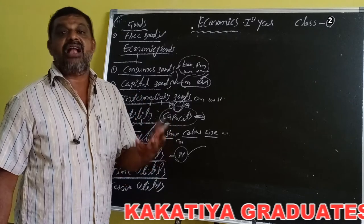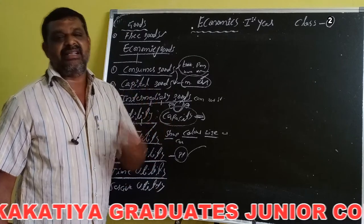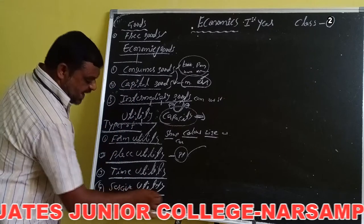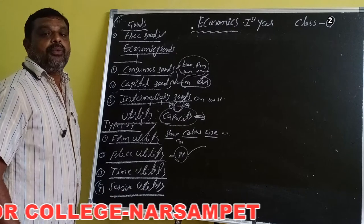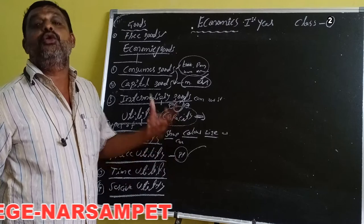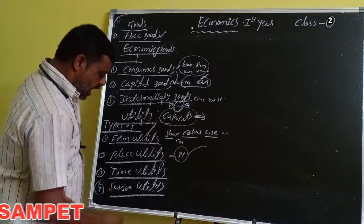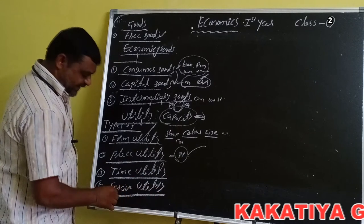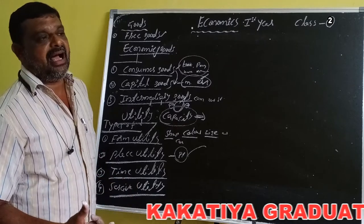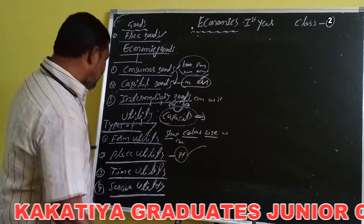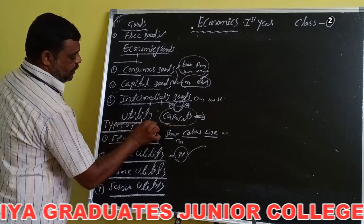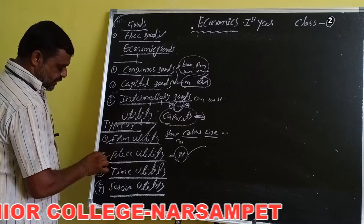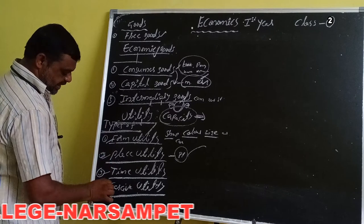For example, we use mangoes in summer season and their juice after the season also. Service utility means services also satisfy human wants. For example, teacher service and doctor service. These are the four types of utility: form utility, place utility, time utility, and service utility.